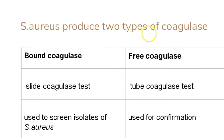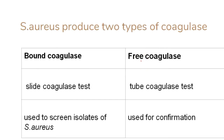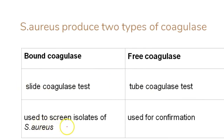Staph aureus produces two types of coagulase: bound coagulase and free coagulase. Bound coagulase is bound to the cell wall of staph aureus, while free coagulase is secreted by staph aureus. Bound coagulase is detected by the slide coagulase test, and free coagulase is detected by the tube coagulase test. The slide coagulase test is used to screen isolates, while the tube coagulase test is used for confirmation.